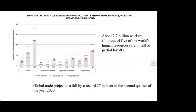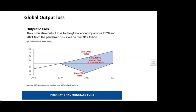The most affected area is employment: 2.7 billion workers, with four out of five of the world's workforce in full or partial layoffs. Global trade was projected to fall by 27% in the second quarter of 2020, though it was estimated to have risen even more by end of 2020. There is a great loss of output — the world would have gained 12.5 trillion US dollars, but instead lost that equivalent due to the pandemic, roughly equal to the entire US GDP.